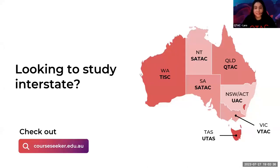If anyone's looking to study interstate, it is a direct application to that TAC — that tertiary admissions centre. As you can see, we've got New South Wales and ACT known as UAC, VTAC for Victoria, SATAC, TISC and UTAS. If you are wanting to go to any of these state universities, you have to apply directly to that state. It is a separate application and we are completely different companies — applying to another state doesn't interfere with your QTAC application.